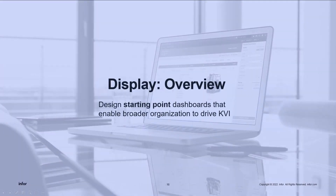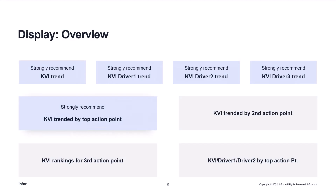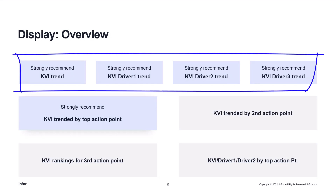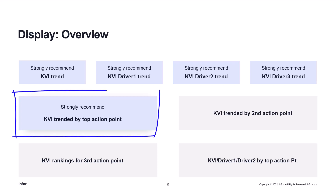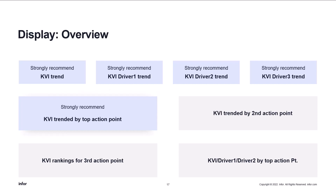Value-Based Design has templates for the dashboards. Let's start with the display overview template. On the top we have the KVI and the drivers trending over time. Using the sales example, we would have revenue over time and, for example, average selling price over time. Then you have a very strong recommendation to have the KVI trended by top action point — sales by sales organization, for example. And then we have other suggestions for the objects on the dashboard, such as rankings — top or bottom 3, 5, or 10.